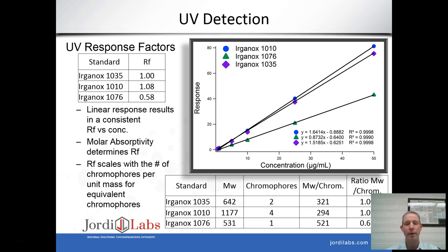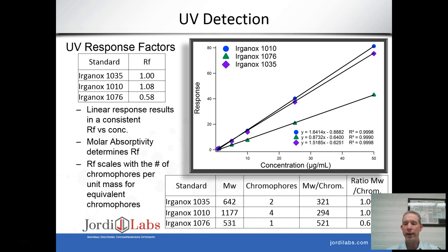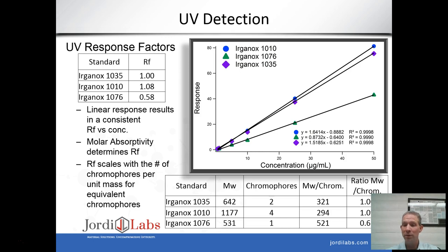We also found that ratioing the molecular weight by the number of chromophores gives values very analogous to the measured response factors: 1, 1.09, and 0.62, comparing nicely with the measured values of 1, 1.08, and 0.58. This ratio could potentially serve as a method for predicting response factors, as long as the chromophore is identical and there are no other absorbing regions in the molecule. In this case it works because all three are hindered phenols sharing the same chromophore, and the rest of the molecule is essentially non-absorbing.